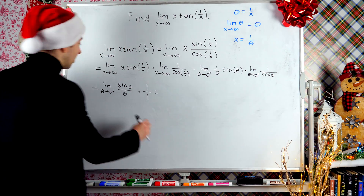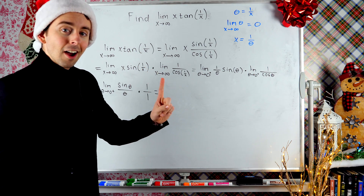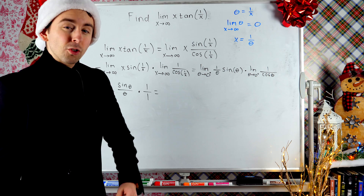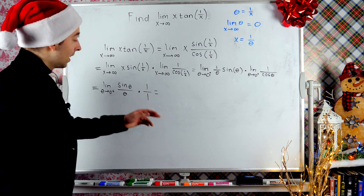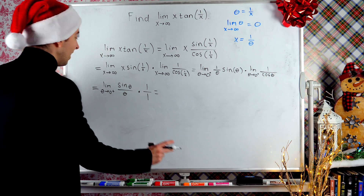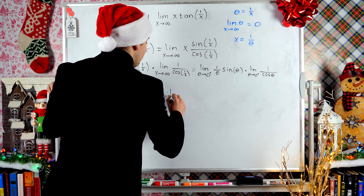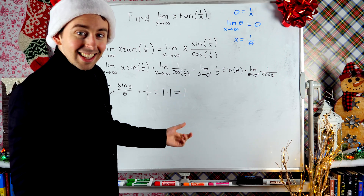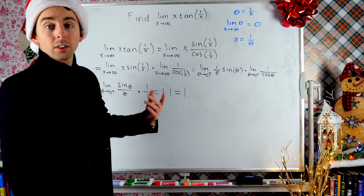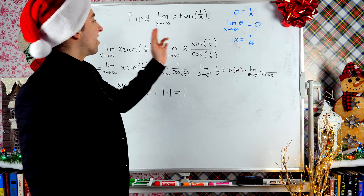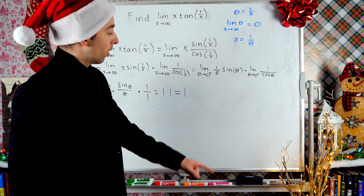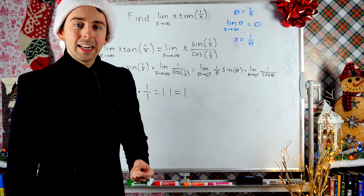So sine of theta over theta approaching 0 gives 1 — it's a fundamental trig limit you should remember: sine of a thing over that thing as the thing approaches 0 is 1. I'll leave a link in the description to my lesson proving that. Approaching 0 from the right still gives 1, and times 1 over 1 is just times 1. So the limit of x times tangent of 1 over x as x approaches infinity equals 1, meaning this function has a horizontal asymptote of y = 1 as x goes to infinity. A very similar proof will show an equal horizontal asymptote of 1 as x goes to negative infinity — you can try that yourself. Let me know if you have any questions. Thank you!